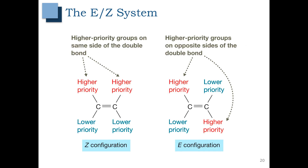What we're going to do is use the EZ system. In the EZ system, we are going to be determining the priority of the groups attached to each carbon of the alkene. If they're on the same side, we're going to get the Z configuration, and if they're on opposite sides, we're going to get the E configuration. We determine priority the same way as R and S — atomic number first, and then if you have equivalent atomic number, we look at what's attached.